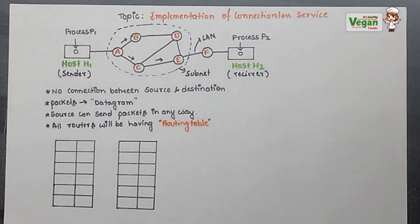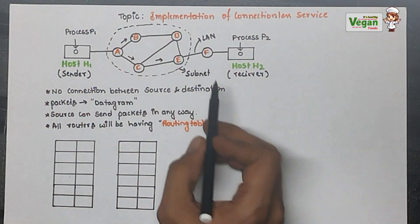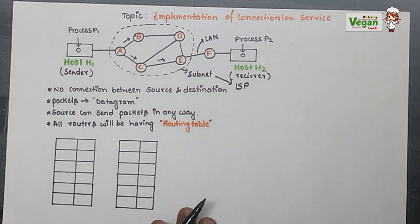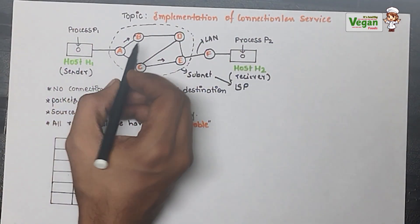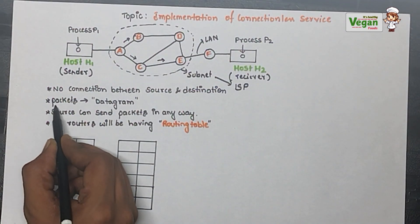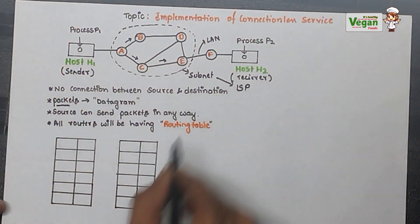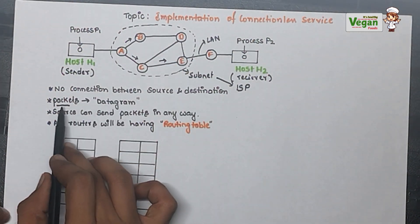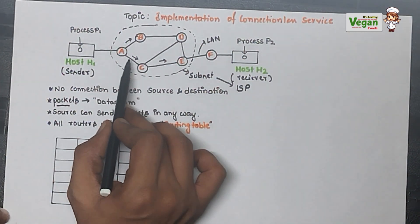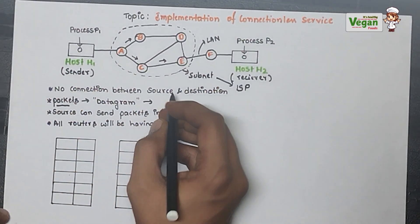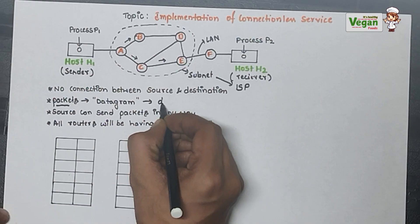If your SIM card is Jio, then the internet service provider for you is Jio; if Airtel, it is Airtel — like that. This subnet can also be called an ISP. Next, the information will be shared in the form of packets, called datagrams in the connectionless service. Because packets are sent between routers, the network will be called a datagram network.